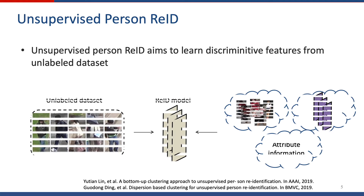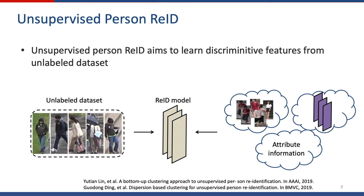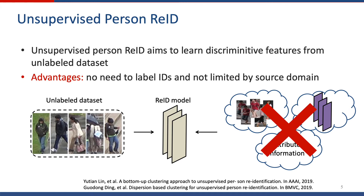Unsupervised person re-ID aims to learn discriminative features from unlabeled datasets. These methods do not need ID information and are not limited by the source domain.